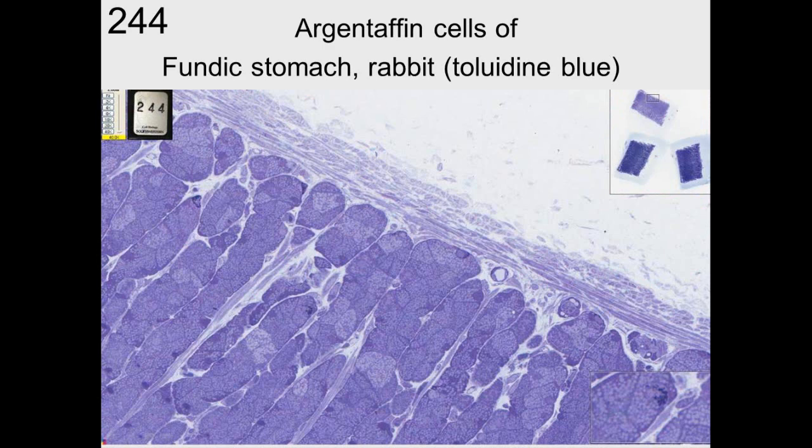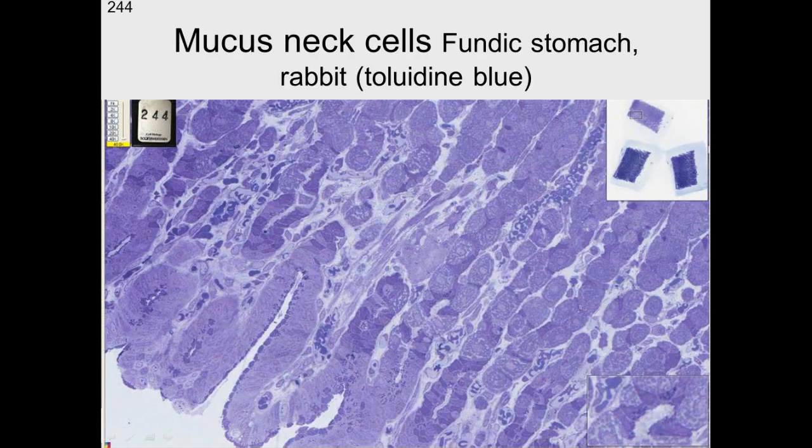We can see that again with the fundic stomach of a rabbit, and we can see the parietal cells have a host of mitochondria around them. On the surface of a cell, we have the surface mucous cells as well on the surface.